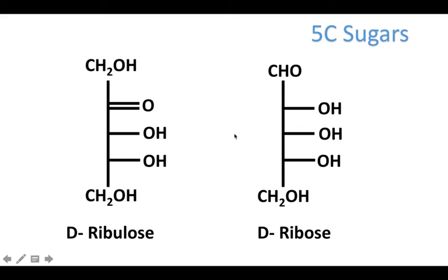Five carbon sugars — sticking with the right side so far: ribulose and ribose, two different forms of this ribose sugar. We've got the ketose form on the left indicated by the double bond and the CH2OH at the top. The way I remember ribulose and ribose is that it starts with an R, so everything's on the right-hand side. The only thing that changes is the carbon 1 and carbon 2 position — whether or not you have a double bond. The bottom part is always CH2OH, and that won't change no matter what sugar we're dealing with.